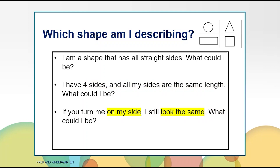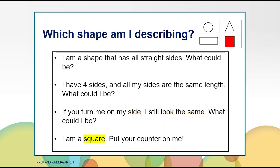Here is the next clue. If you turn me on my side, I still look the same. What could I be? Now that you have all the clues, decide if you want to keep the counter on the shape you chose or move it. The answer is a square. Put your counter on the square. The square has four straight sides and they are all the same length.